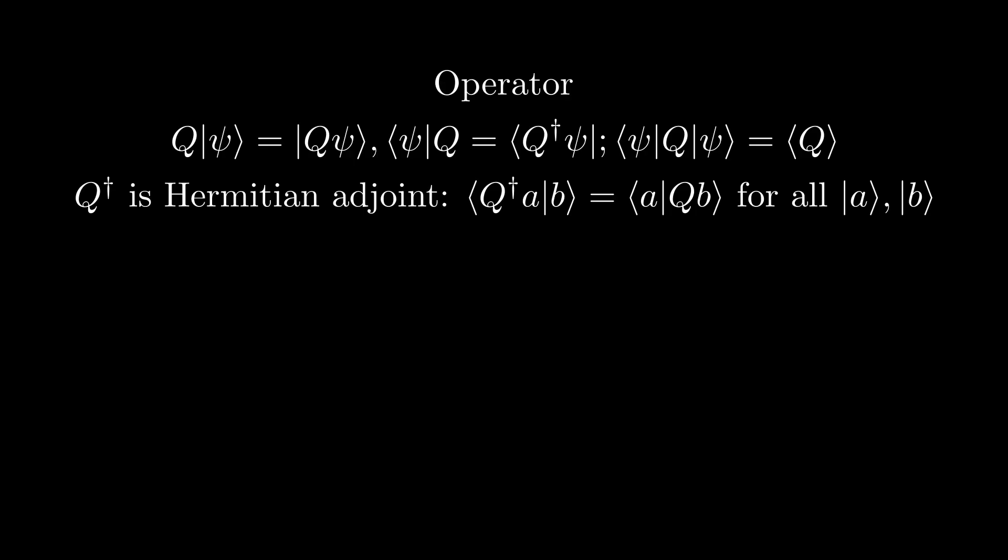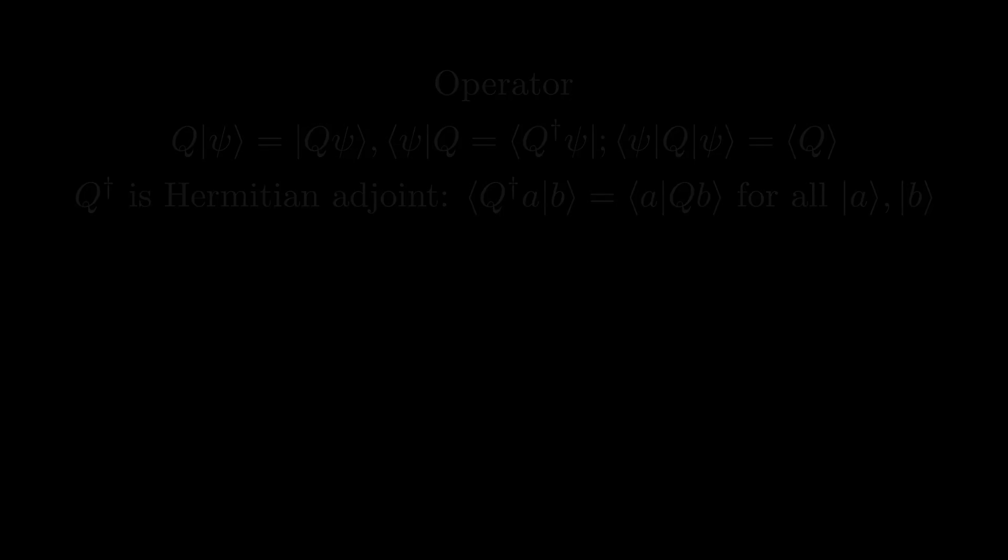You may be wondering how we apply an operator Q to a bra. Well, in general, we have that this is simply given as the bra of the Hermitian conjugate, also known as the Hermitian adjoint, Q dagger, of the operator Q, on the ket represented by the bra, where we define the Hermitian conjugate as follows. For continuous functions, these operators usually take the form of some combination of functions and differential operators. While we will encounter many types of operators in this course, there is one specific type that I want to focus on in this video.